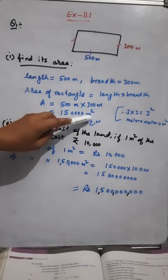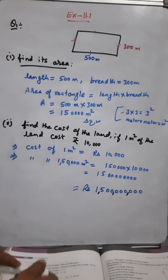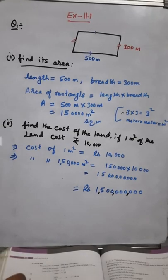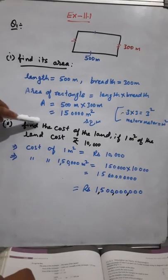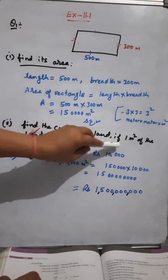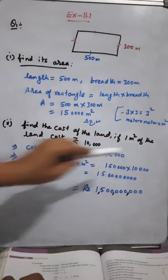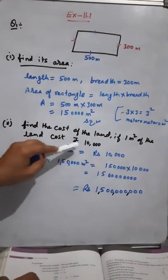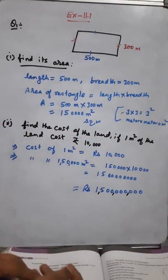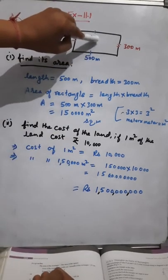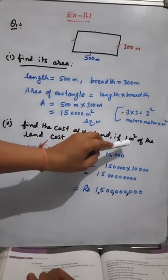Area is always measured in square units. The second part of this question: first we found the area, and second we have to find the cost of the land if one meter square of the land costs rupees 10,000.